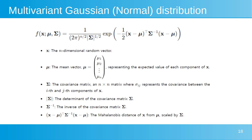The multivariate Gaussian distribution describes the probability density of a random vector X in R^n. It is characterized by its mean vector mu and covariance matrix sigma. The probability density function is given by the formula, where X is the random vector, mu is the mean vector, and sigma is the covariance matrix. The determinant and its inverse help scale the distance of X from mu, measured by the Mahalanobis distance. The PDF shows how likely it is to observe the vector X, taking into account the distribution's mean and variance structure.